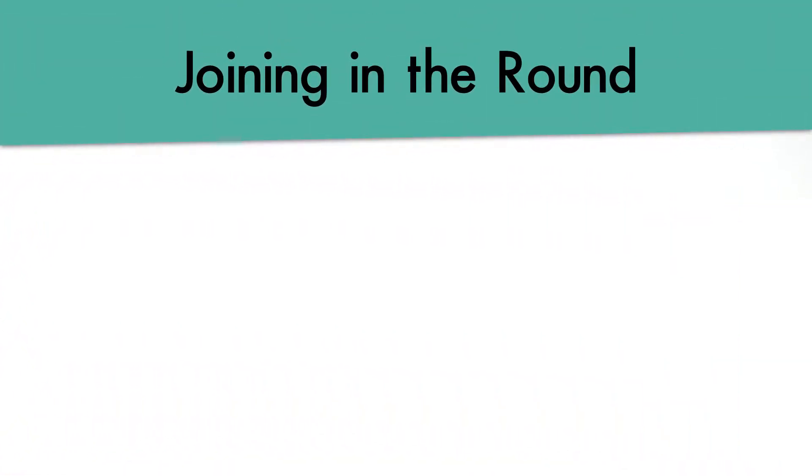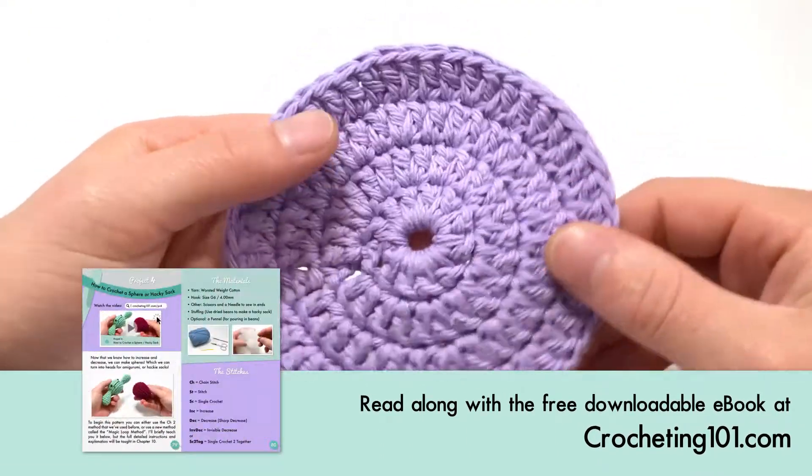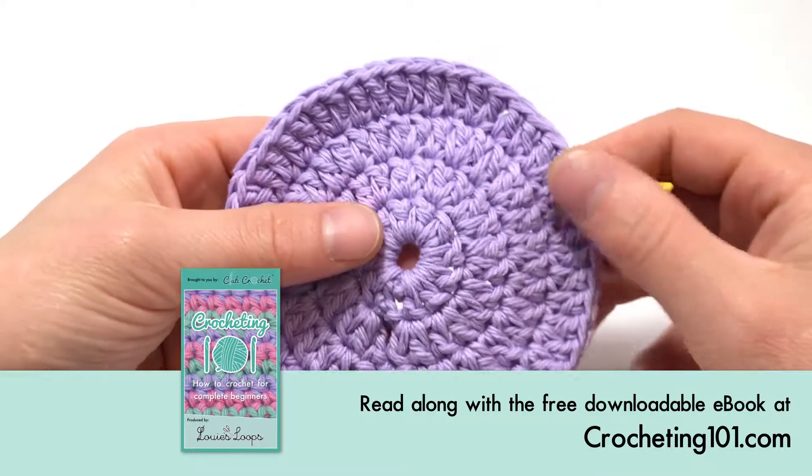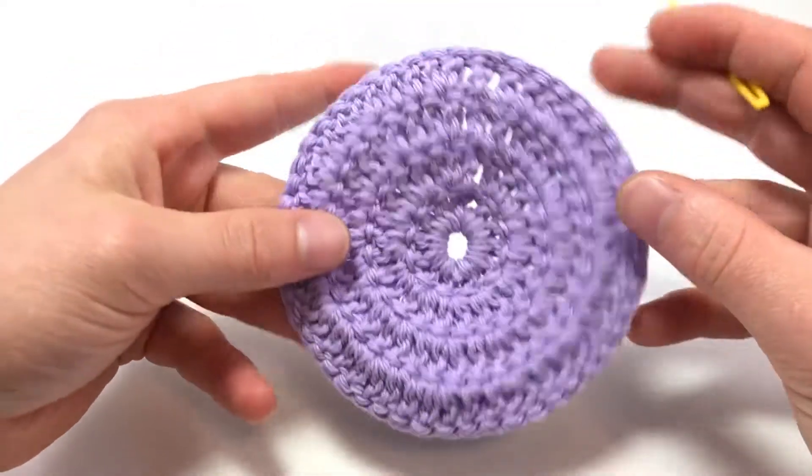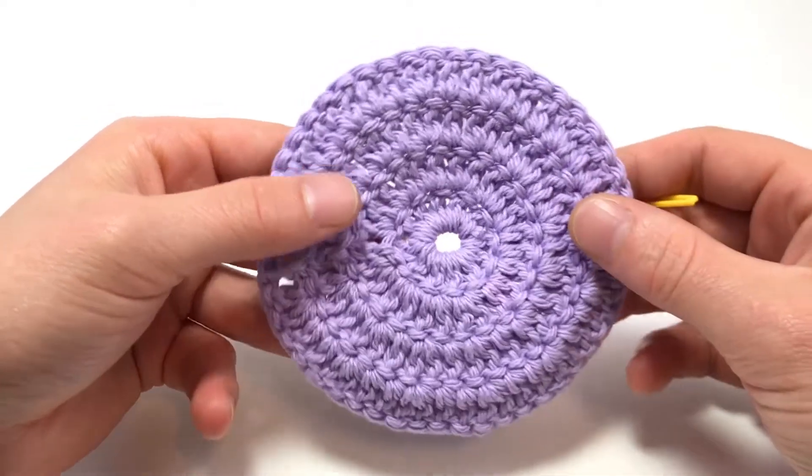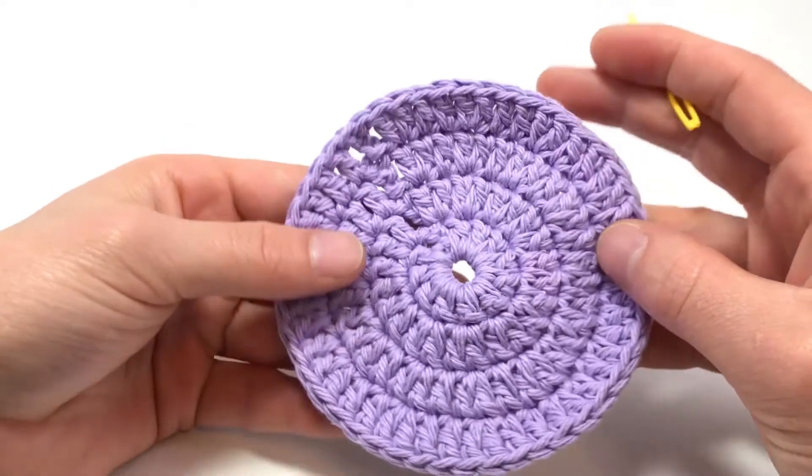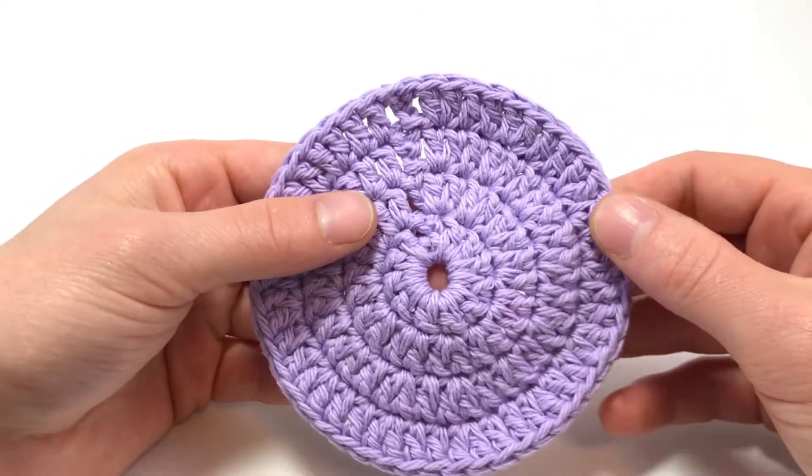Joining in the round. So I left this out of chapter 4 where we learned about increasing and working in the round versus flat because it's kind of a meld between the two. And while it's definitely a great technique, I surprisingly don't actually find myself using it very often. But that's probably because it's not really used too often in amigurumi.